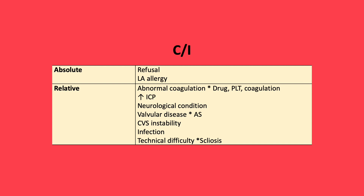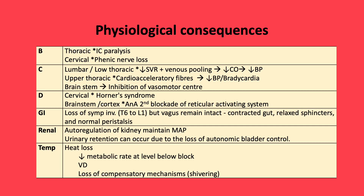So when are central neuroaxial techniques inappropriate? These can be absolute or relative contraindications. Absolute would be patient refusal or local anaesthetic allergy. Relative contraindications include abnormal coagulation, increased ICP, neurological conditions such as MS, valvular disease such as aortic stenosis, cardiovascular instability, ongoing active infection, or technical difficulty — for example, a patient with scoliosis.